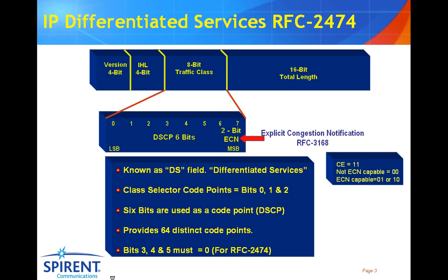If we take a look at the traffic class field, we can see it's made up of eight different bits. Six of these bits are actually used to define the quality of service. However, bits 3, 4, and 5, by definition, must be set to zero. So in reality, only bits 0, 1, and 2 are used to define the quality of service which this packet is going to experience as it moves across the network. If all the bits are set to one, it indicates that the packet is to receive the highest class of service. So although we could theoretically have many more combinations, due to the fact we're only using three bits, we only actually have eight possible variants, or eight different types of service, using RFC 2474.